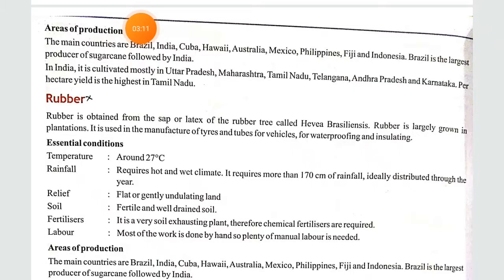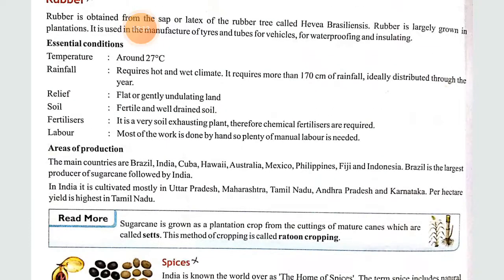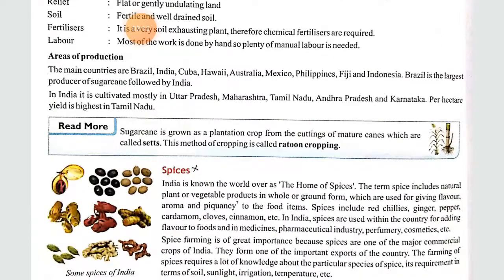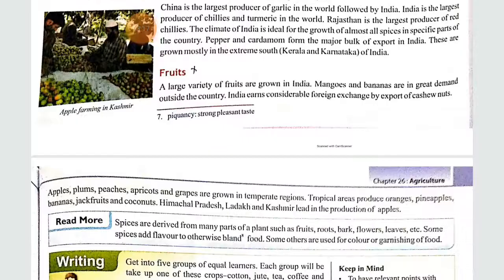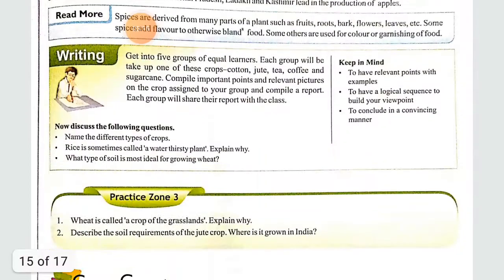Then comes rubber, which is not important for the exam, so we skip it. Then spices and fruits, which are also not our concern. After completion of the chapter, as always, you will get the solution for practice zone 3.